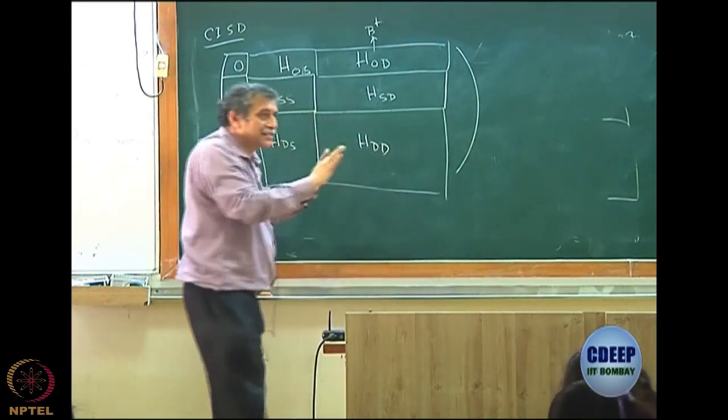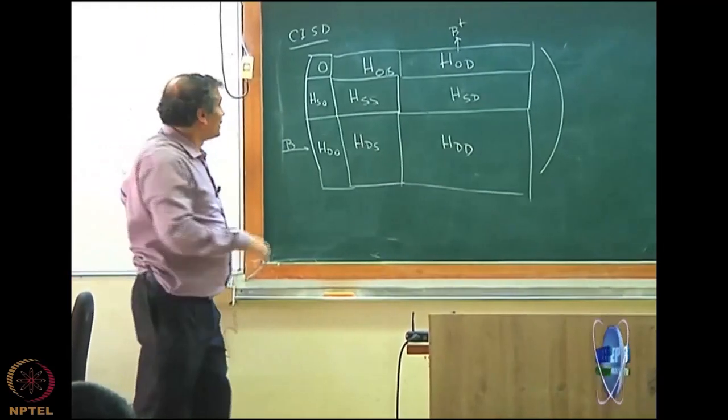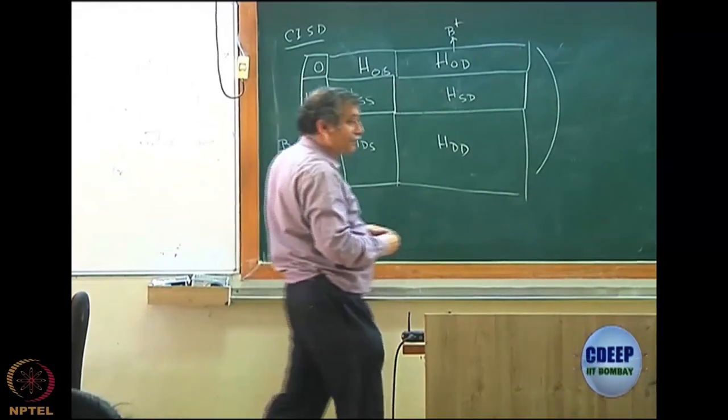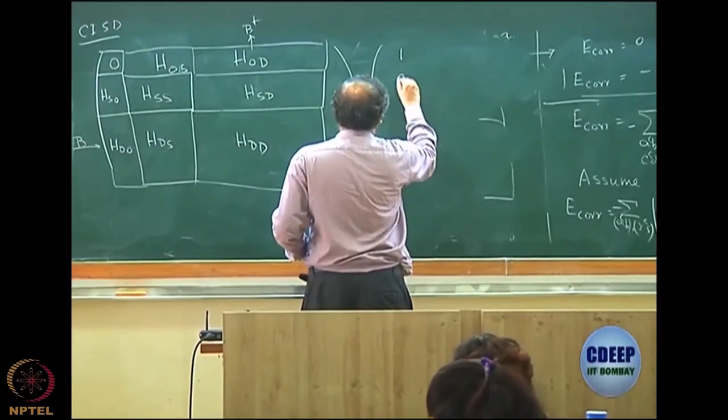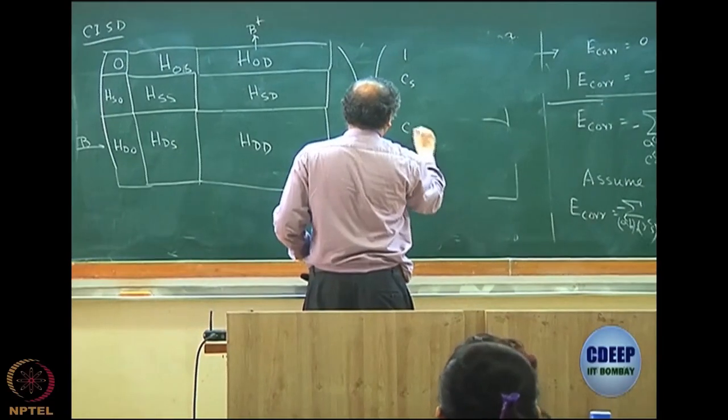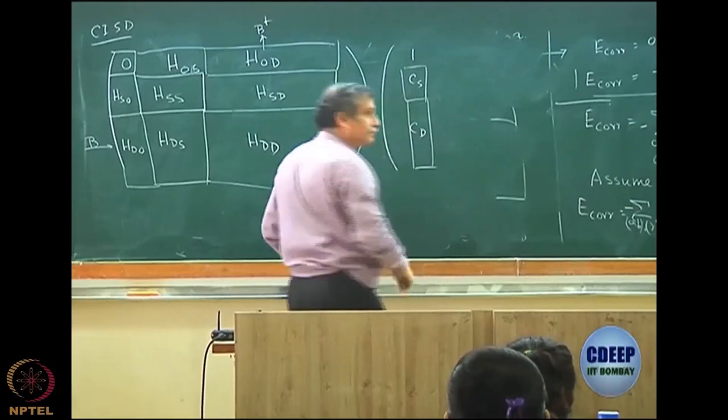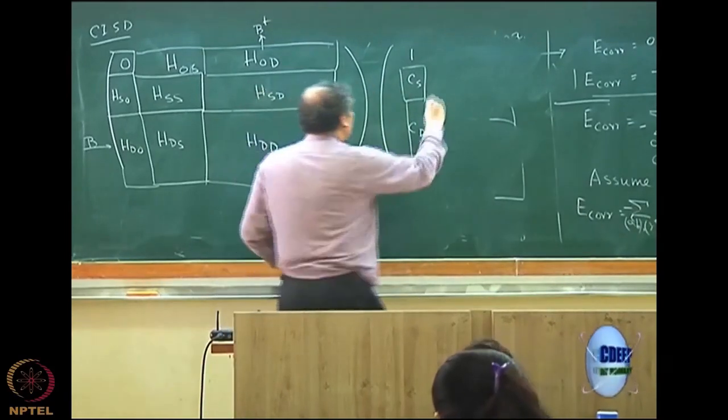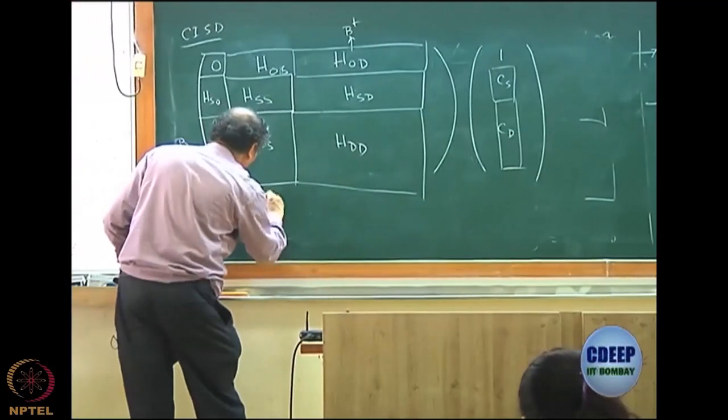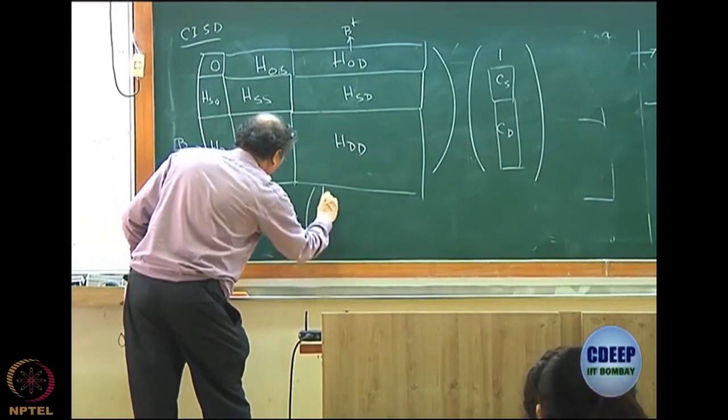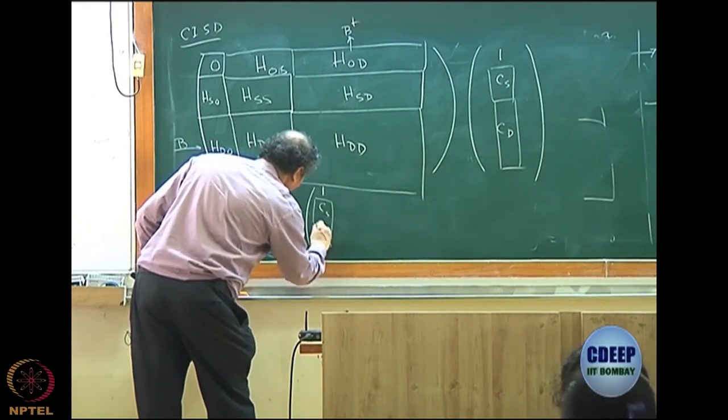This is a square matrix. So please understand, from the block itself you will know. And then you have similarly the reverse of this which is HDS and eventually another square matrix which is HDD. You can try to write as nicely as possible. This is my matrix of the Hamiltonian and then I have 1, CS, CD.